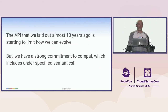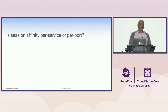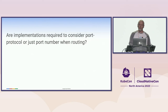The API we laid out almost 10 years ago is starting to limit how we can evolve. Kubernetes has a strong commitment to compatibility, and that includes things like underspecified semantics. What do I mean by underspecified semantics? Is session affinity per service or per port? Well, we never specified that. Now we have multiple implementations which choose different interpretations, and we can no longer define it because we would break somebody. Are implementations required to consider port protocol or just port number when routing? We didn't write that down, so variant implementations have made different decisions.